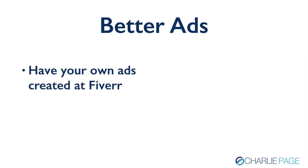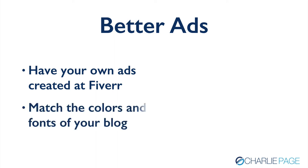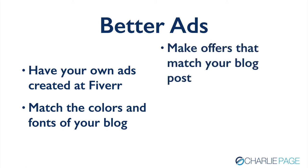How do you do that? Number one: have your own ads created at Fiverr or somewhere else. I use a site called Canva — C-A-N-V-A dot com — and I really love it. You can go to Fiverr and have somebody do it for just a few dollars. You want to match the colors and fonts of your blog. You don't want your ad to blend in, but you also don't want it to look like a neon billboard that distracts attention — you want it to harmonize with your site. Also, make offers that match your blog post. If you've got a blog post about topic A, don't offer a product for topic Z. Match your offers to your blog post content.